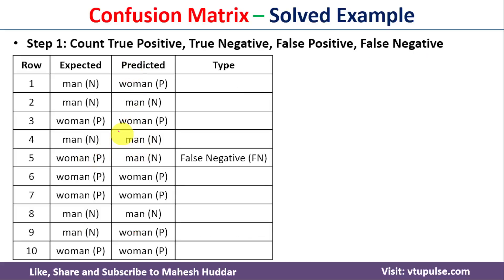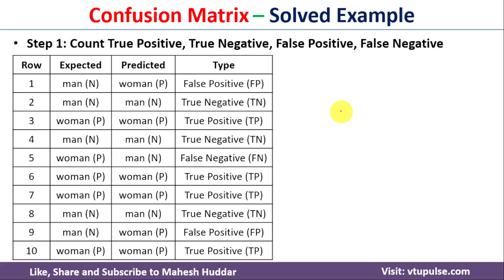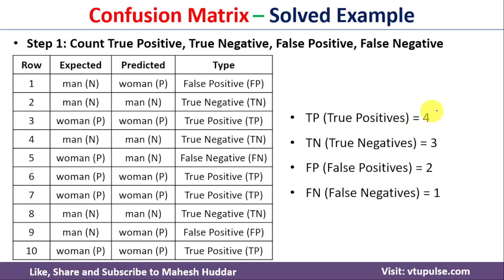False negative means expected is woman but predicted is man. In the 10 records we have 1 record with a false negative. So in summary: true positives = 4, true negatives = 3, false positives = 2, false negatives = 1.